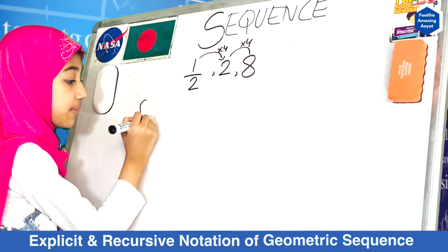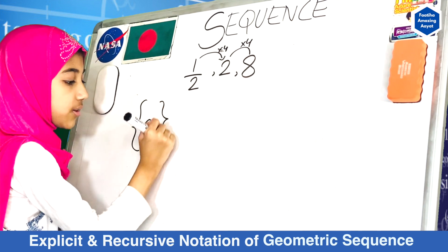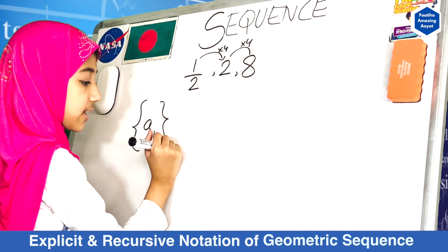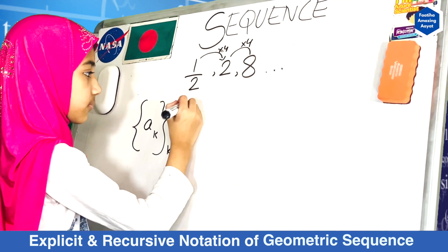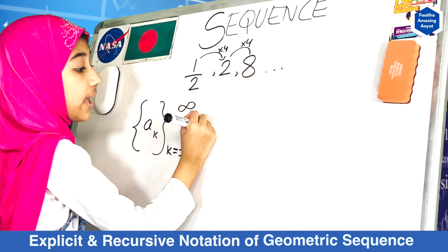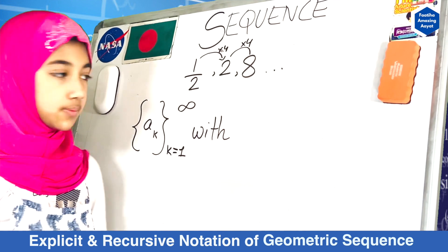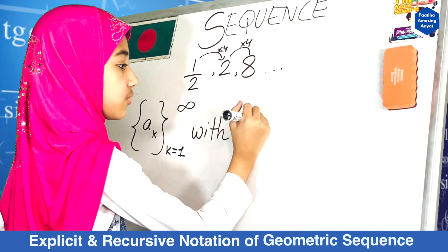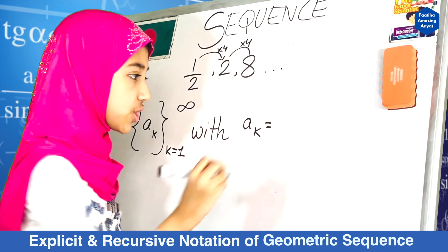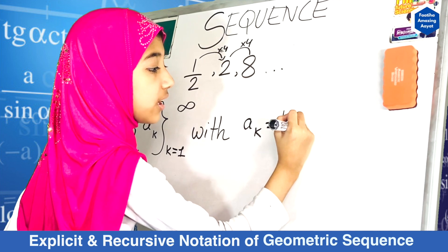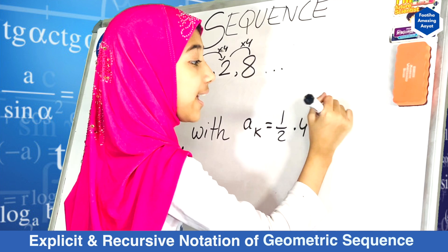First you're going to write A sub k. I've also shown you in the other episodes that you can use other variables if you want. A sub k, k is equals to 1 to infinity. First I'm going to show you the explicit. The explicit will be: A sub k is equals to your first term, which is half, multiplied by your common difference to the power k minus 1.